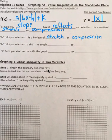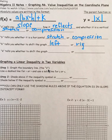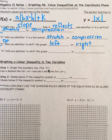And 'h' tells you whether the graph shifts left or right. If you remember from last time, the x always lies. So the b value and h value are always opposite what you think. For the h, that just means when you move left it's plus, and right it's negative.